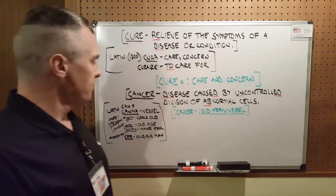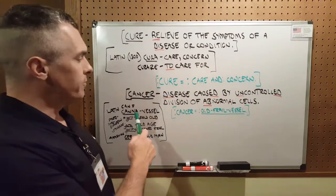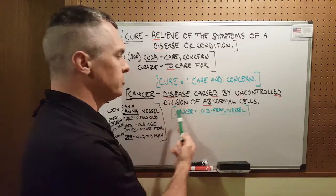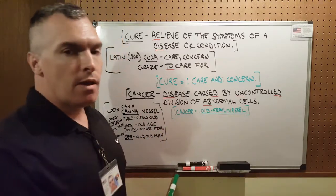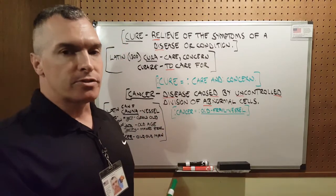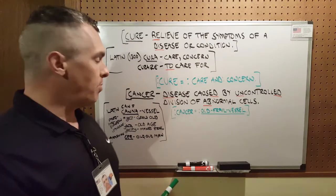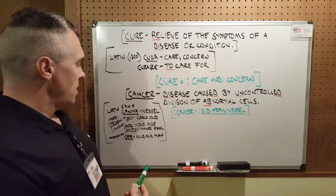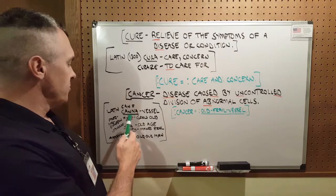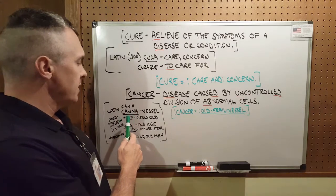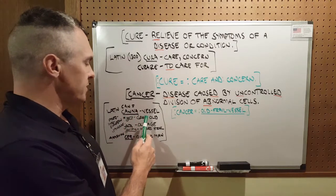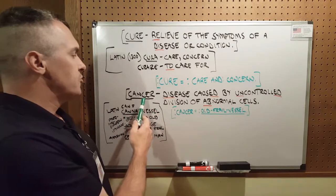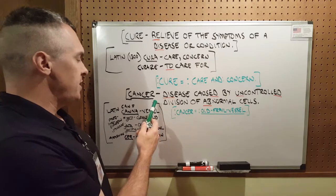Speaking of cancer, Google defines it as a disease caused by uncontrolled division of abnormal cells. When I parsed the word, I found that can is equal to Latin canna, which is a vessel. And then cer — C-E-R —